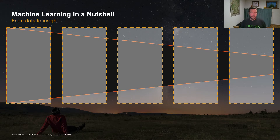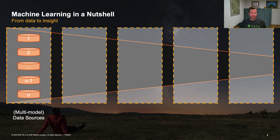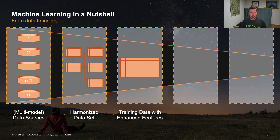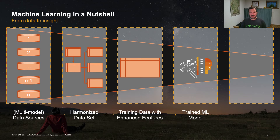So what is machine learning? You have several multi-model data sources, which you bring together into one harmonized data set or one harmonized data model. Out of that harmonized data model, you're creating training data with some enhanced features. At the end of the day, you have a flat table and you're generating more and more features to describe the records in that table. Based on that training data, you train a machine learning model, and based on that you get some predicted outcome.